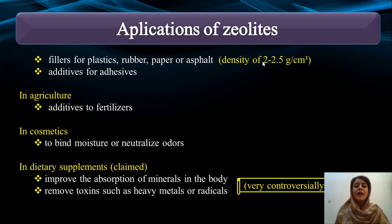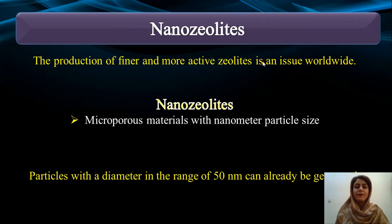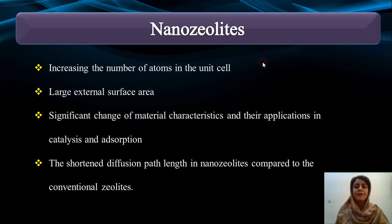However, their use in supplements is very controversial. Regarding nanozeolites: the production of finer and more active zeolites is an issue worldwide. Microporous materials with nanometer particle size are called nanozeolites, and particles with a diameter in the range of 15 nanometers can already be generated. By decreasing the size of particles from micro to nanometer, their properties change and the number of atoms in the unit cell increases.